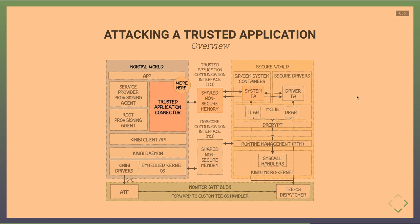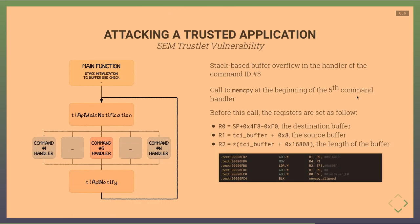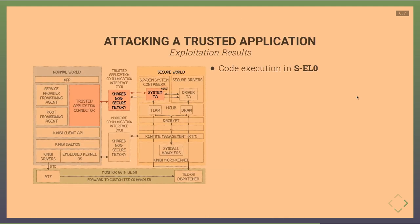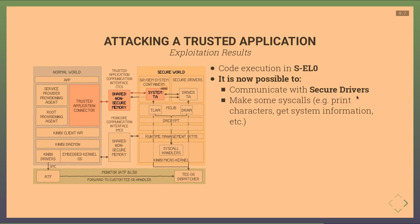The first vulnerability is in the trustlet called SEM. It has a classic buffer overflow in the fifth command handler: a memcpy with a user-controlled size, a user-controlled source, copying directly onto the stack — a textbook stack buffer overflow. Exploiting this gives code execution in SEL0, enabling communication with secure drivers and some syscalls, though those available to trusted applications are not very useful.